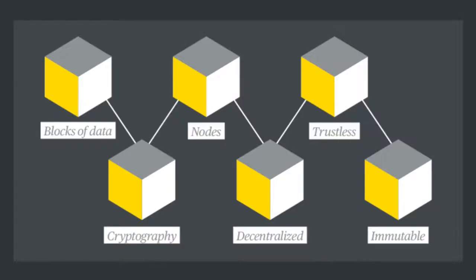Generally speaking, blockchains share some common features. It's a method of securely storing and linking blocks of data using cryptography. Each transaction is stored in a unit of data called a block, and those blocks are securely linked to each other, forming a chain of records that goes all the way back to the start of the ledger — hence the phrase 'blockchain'.